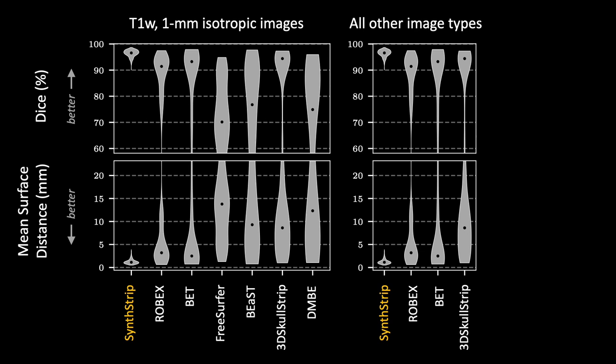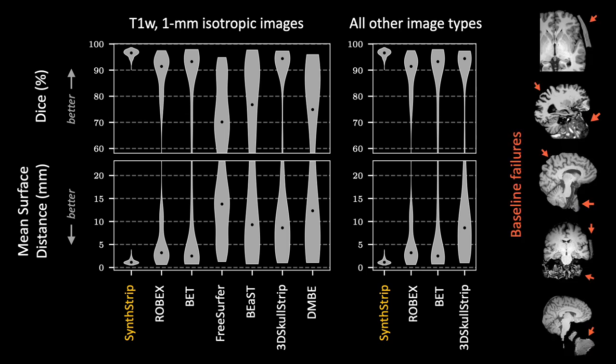We measure accuracy by computing similarity between estimated and manual brain masks, obtained in a completely separate manner from the training data. When considering both the Dice overlap and the surface distance between these masks, SynthStrip outperforms the baseline methods by a substantial margin. This predominance is in part due to the tendency of SynthStrip to avoid substantial mislabelings that occasionally occur in the baseline methods, as the model consistently predicts boundaries that are of realistic and expected brain shape.